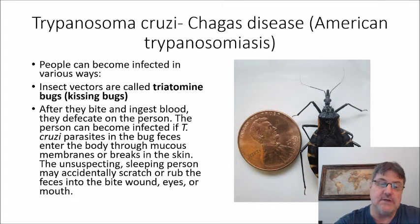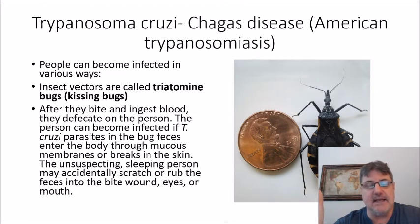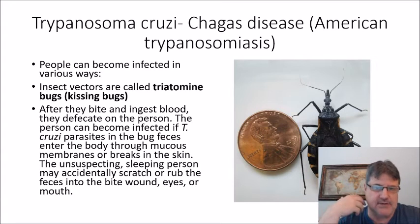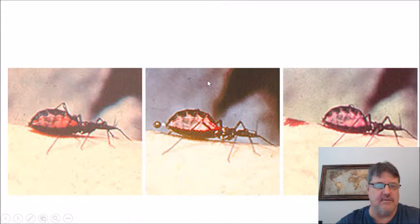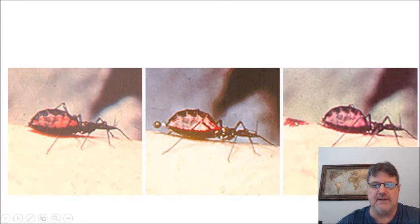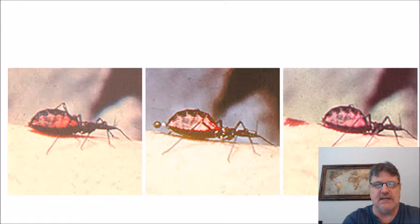The parasite can enter the body through mucous membranes or breaks in the skin. For example, somebody that's sleeping — the kissing bug comes up in the middle of the night, defecates near the eye, the person rubs it, the parasite gets in, and they are infected. That's one way. It can also be rubbed into a wound on the arm or wherever. Here's a picture of a kissing bug on the far left. In the middle slide, you can see it defecating. If the individual scratches and breaks the skin, they become infected with Trypanosoma cruzi.